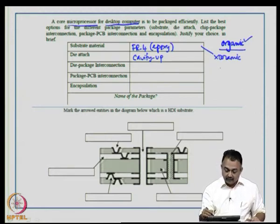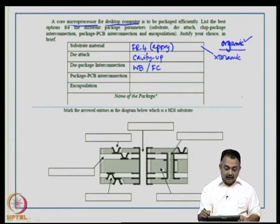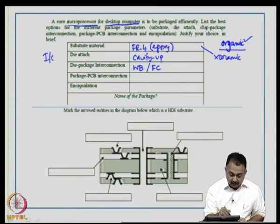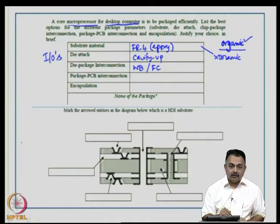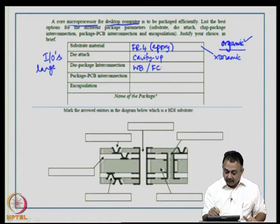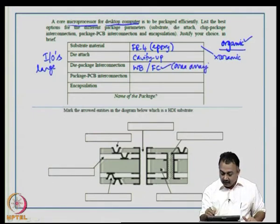For die-to-package interconnection, the number of IOs in this microprocessor will be large. Wire bond has limitations, so the obvious choice is flip chip, which offers area array type interconnect. TAB is not suitable because it cannot provide the required number of IOs.